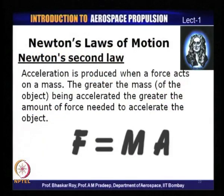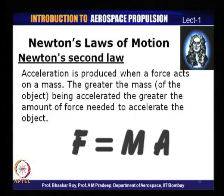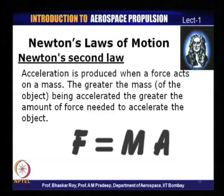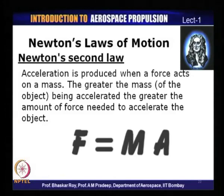Newton's second law of motion states that acceleration is produced when a force acts on a mass. The greater the mass of the object to be accelerated, the greater the amount of force needed to accelerate or create the motion. Creation of motion itself is a kind of acceleration — when starting from a state of rest, you need force. This is codified simply as F = ma, m being the rest mass.